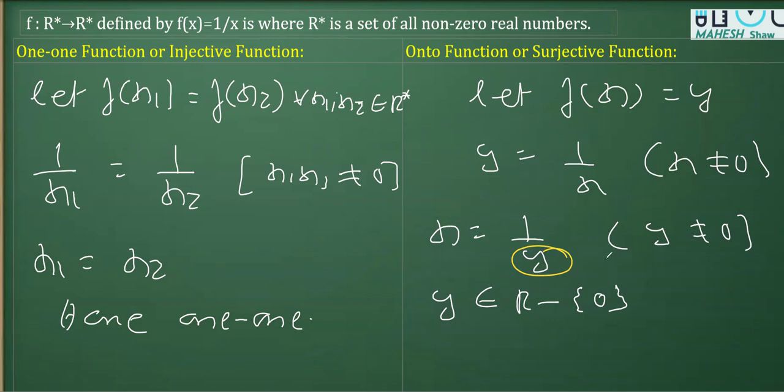Clearly, there exists an x that belongs to R*. This is onto also. Therefore, this function is one-to-one and onto.